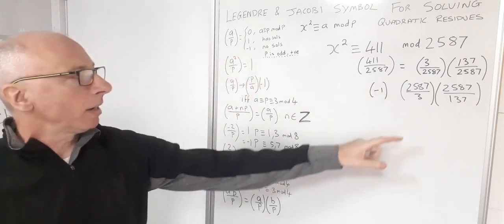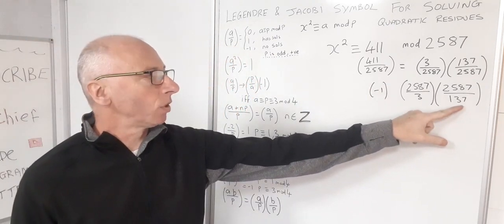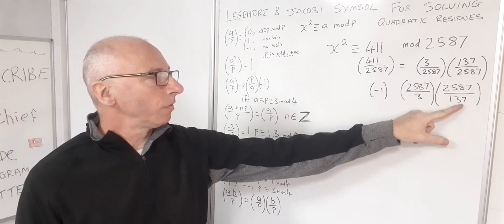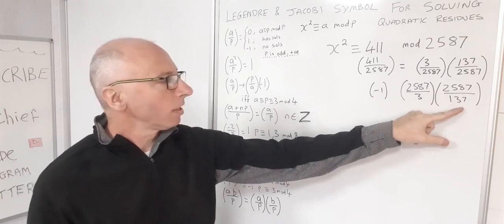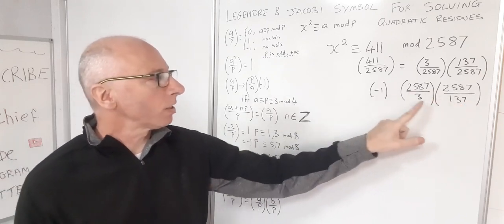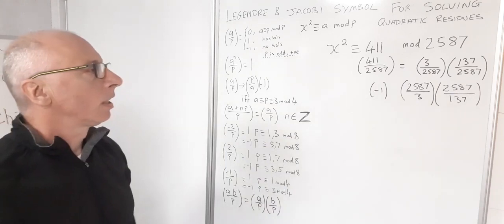And what about 137? Is that congruent with 3 mod 4? Well, 4 times 37, that's going to give me 136. So that's not congruent. So it's just one minus 1 sign I need here.